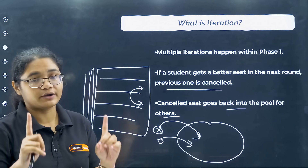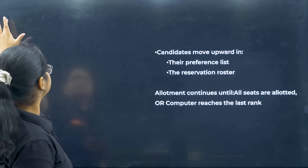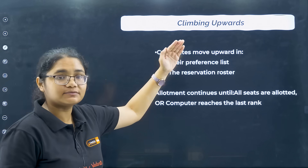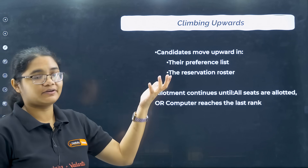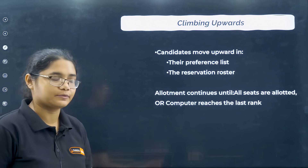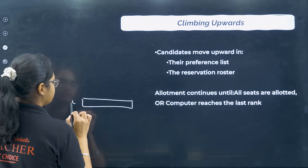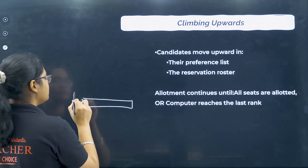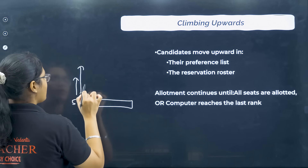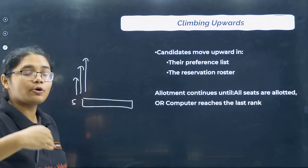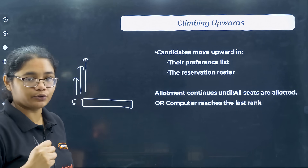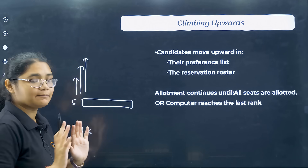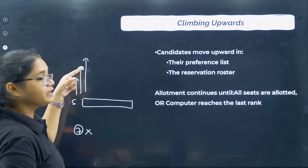Climbing upwards is very important. Candidates always move upwards in their preference list. Suppose you were allotted the fifth college in one iteration — in the next iteration you will always move to a better option. It will never happen that you got the fifth option and then in the next round you get the seventh. You will always be moving toward better colleges.